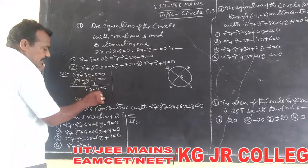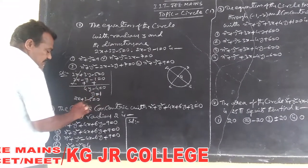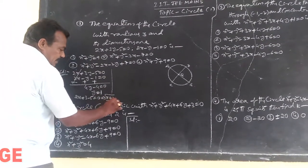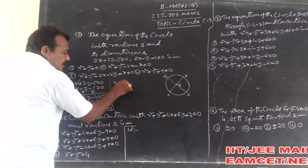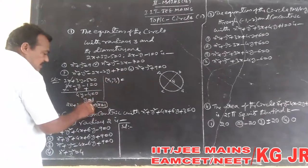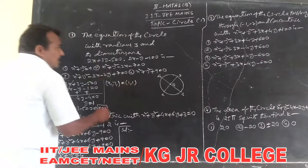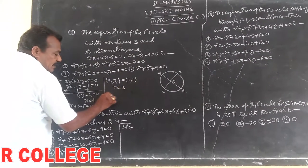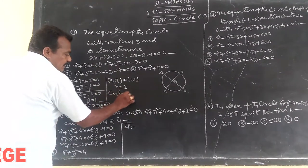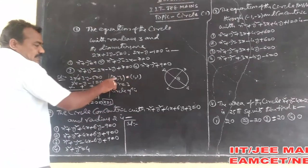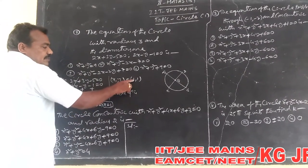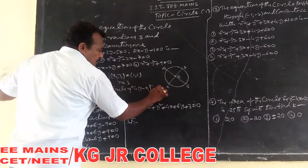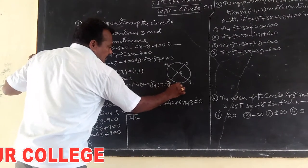Substituting y equal to 1: 2x plus 3 into 1 minus 5 is equal to 0, giving 2x minus 2 equal to 0, so x is equal to 1. The center of the circle is at (x1, y1) equal to (1, 1). The radius of the circle is equal to 3. The circle equation in terms of center and radius is x minus x1 whole square plus y minus y1 whole square is equal to r square.